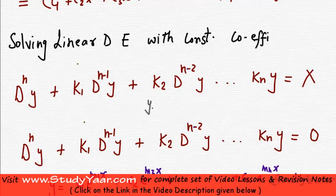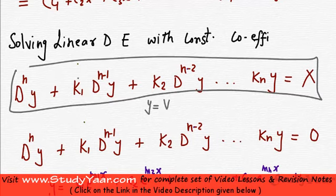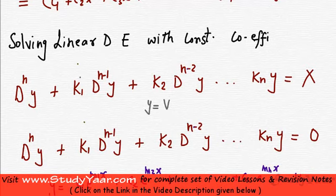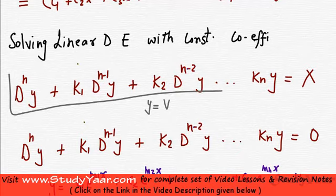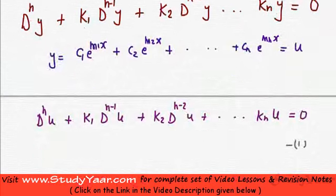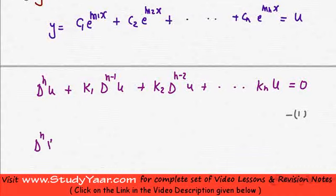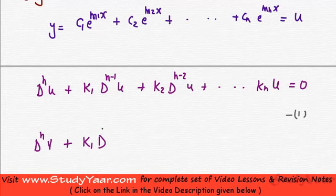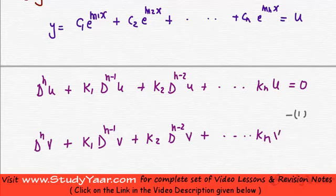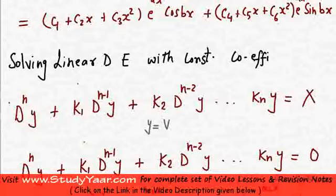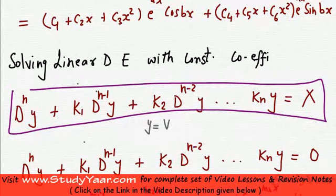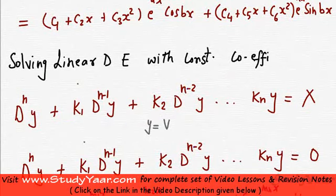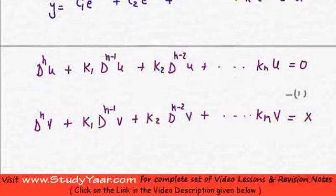Let us say that y equal to v is a particular solution of this guy. If y equal to v is a particular solution, then it must satisfy this equation. So what we have is: D raised to power n of v plus k1 D raised to power n minus 1 of v plus k2 D raised to power n minus 2 of v, and so on up until kn·v equal to x. This is equation number 2.